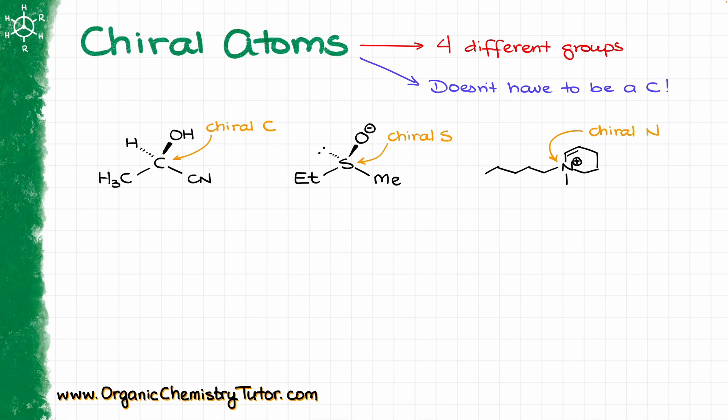The first criterion is easy. A chiral atom needs to have four different groups on it, and we need to have at least two of those. Notice how I purposefully say atom instead of carbon — I'm doing it quite intentionally, as other atoms can be chiral just as well.